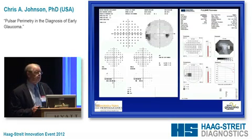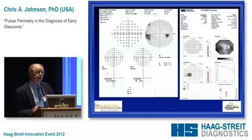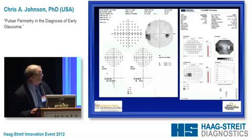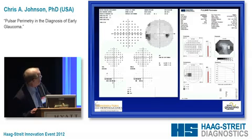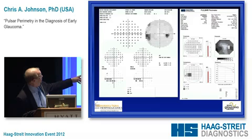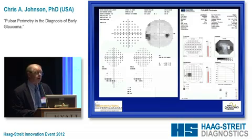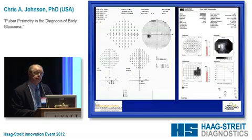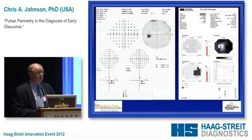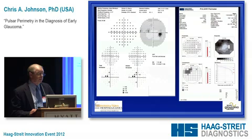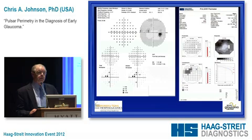Here are some examples from a multicenter trial we did with a group in Argentina, a group in Italy, and a group in Portland, Oregon. This was compared to the Humphrey 30-2. One case shows an inferior partial arcuate defect with a nasal step and good reproducibility for the Pulsar perimeter. Another shows an inferior paracentral-type defect depicted quite well and more prominently on the Pulsar than on the Humphrey. A third shows a superior nasal step that also looks more prominent on the Pulsar.